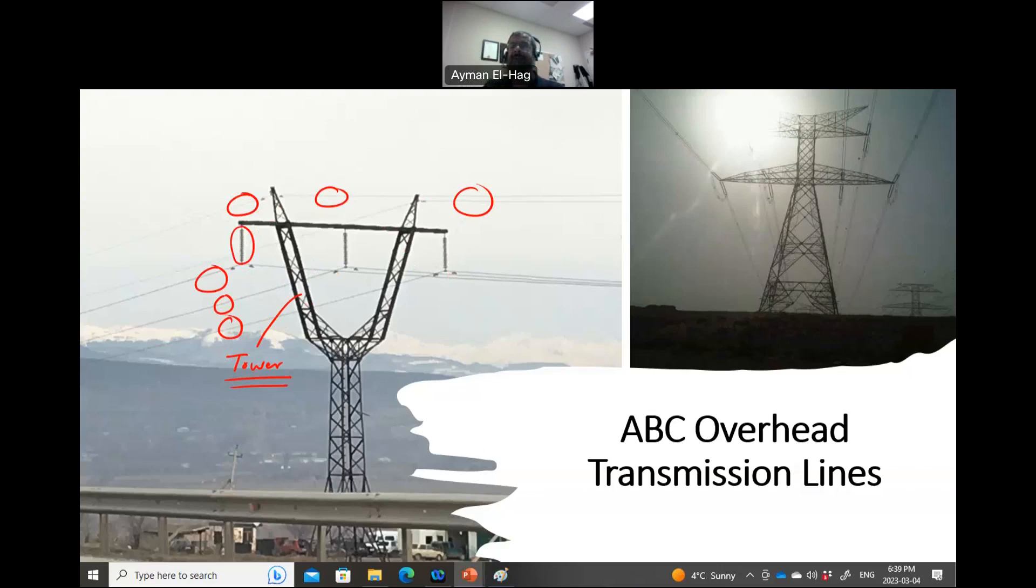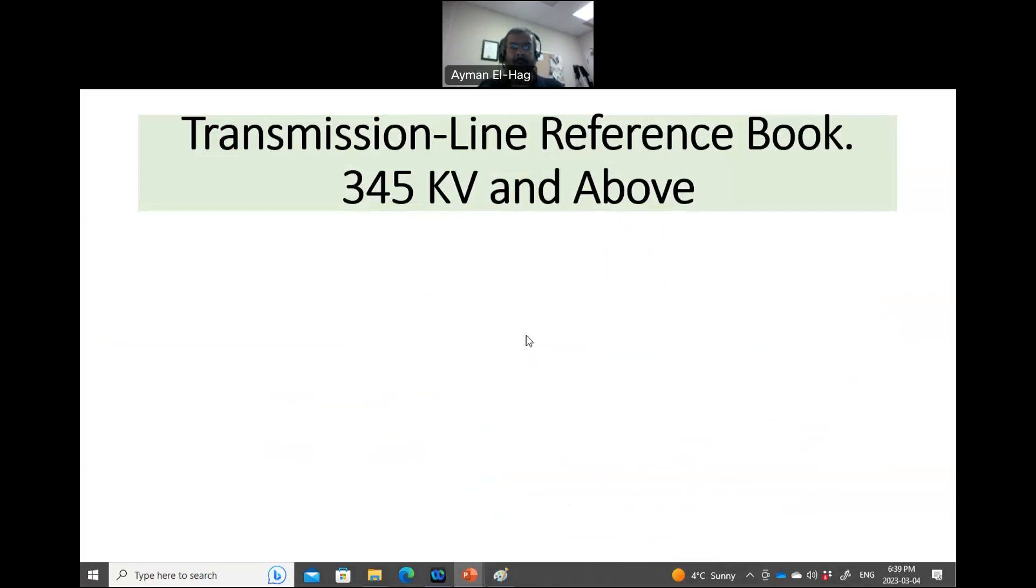Now, to explain the different components, I will use the following style. So basically, I am using this book, the Transmission Line Reference Book for 345 kV and Above. This book is available online. One part of this book talks about existing projects in North America, different overhead lines at different voltage levels, and it gives details about these overhead lines. So I will try to take some snapshots of those projects and try to explain the most important terminologies used in overhead lines.